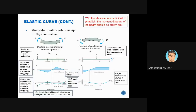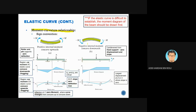Next, continuing with the elastic curve — remember the moment-curvature relation we covered previously. For the sign convention: a positive internal moment results in the beam being concave upwards, while a negative internal moment results in concave downwards.